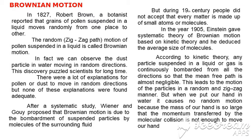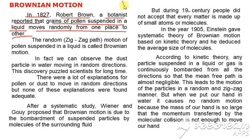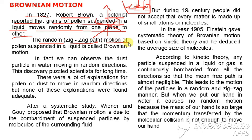Next we are going to see Brownian motion. In 1827, Robert Brown, a botanist, reported that grains of pollen suspended in a liquid move randomly from one place to another. When pollen grains are suspended in a liquid, they move in a zigzag path. That random motion of the pollen suspended in the liquid is called Brownian motion.